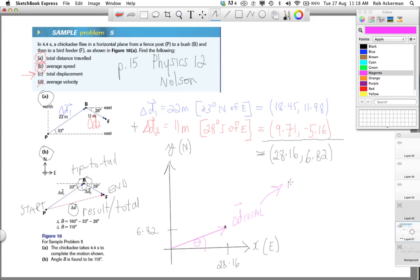So, if you remember, to find the magnitude, you have to use Pythagorean theorem. And that's going to be the square root of 28.16 squared plus 6.82 squared. I'm doing this all in one step. And if you run that through your calculator, that's going to come out to, I believe, 28.97, which rounds to 2 sig figs 29 meters.